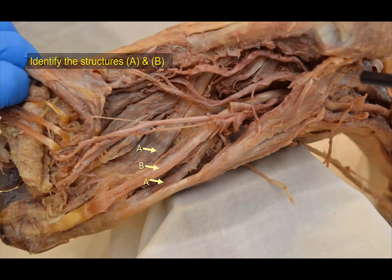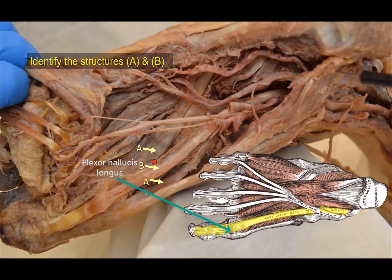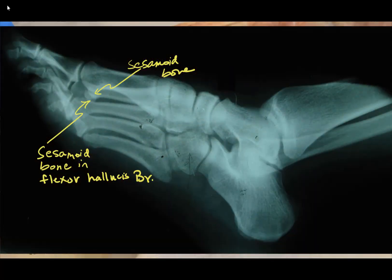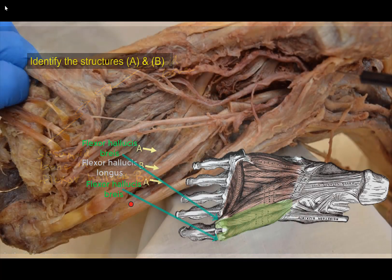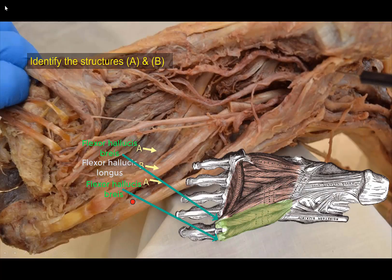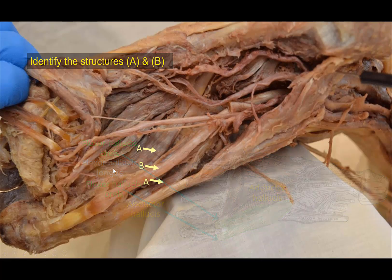Identify structures A and B. Structure B is the tendon of flexor hallucis longus, which passes between two groups of muscle fibers belonging to flexor hallucis brevis. Each tendon of flexor hallucis brevis has a sesamoid bone attached to it, preventing crushing of the flexor hallucis longus tendon as it passes between them. Each sesamoid bone also receives another muscle's tendon: the medial sesamoid receives the tendon of abductor hallucis, and the lateral sesamoid receives the tendon of adductor hallucis.